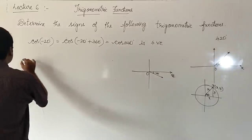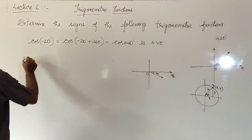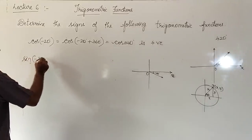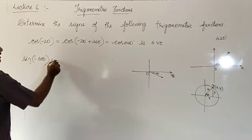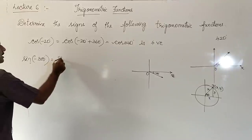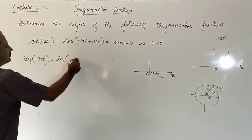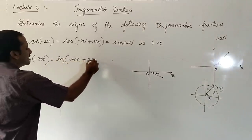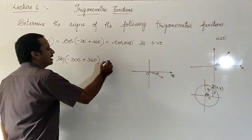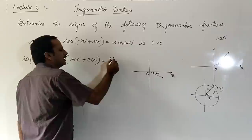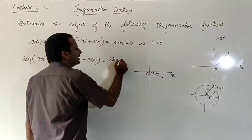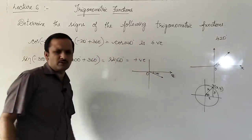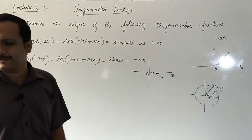Next: sin(−300 degrees). Add 360 degrees: −300 + 360 = sin 60 degrees. Sin 60 degrees is positive — first quadrant.